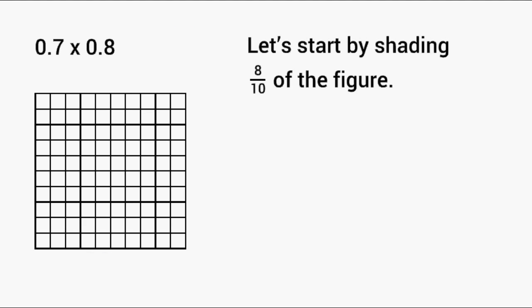We're going to start off by letting 0.8 represent the width of our model, so we're going to shade eight tenths of our figure. So we have one tenth, two tenths, three tenths, four tenths, five tenths, six tenths, seven tenths, and of course eight tenths.